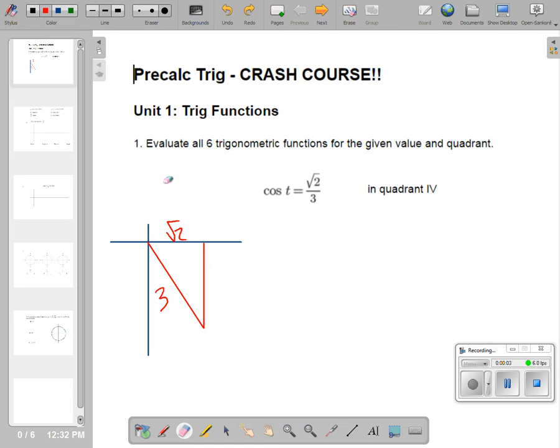Hello ladies and gentlemen, it is pre-calc final exam time. So we're going to go through each unit in our little crash course here. First thing, this has to evaluate all six trig functions. It's giving me a cosine and it tells me we're in quadrant four.